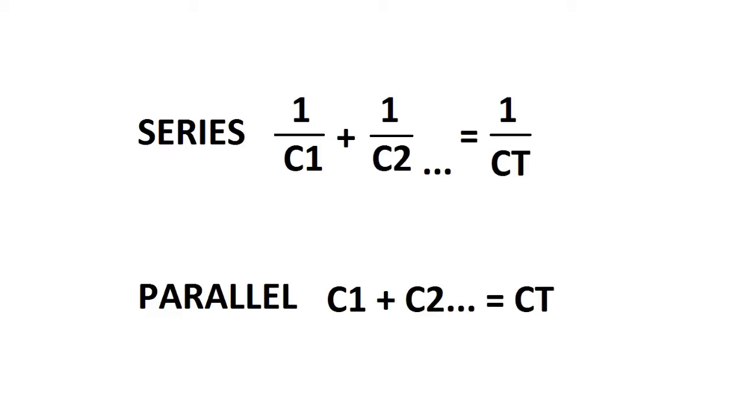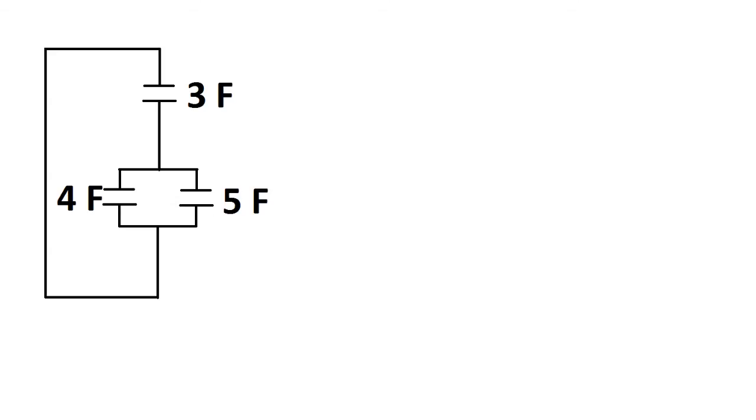Then in parallel it's just capacitor 1 plus capacitor 2 and so on, equals capacitor total. So now let's find the capacitance total of this circuit.